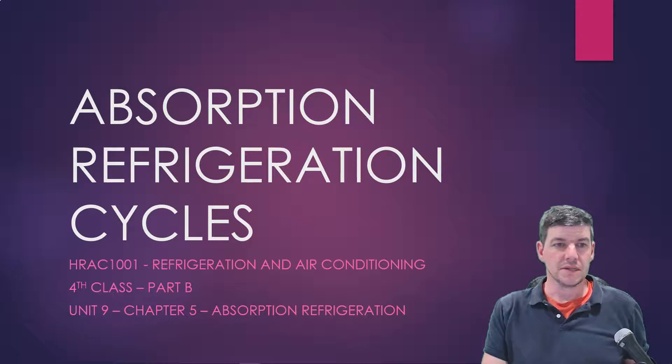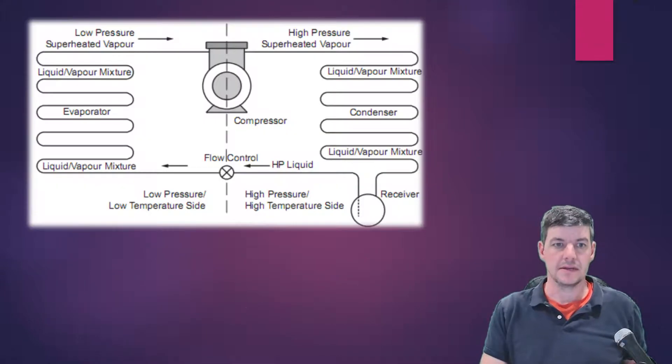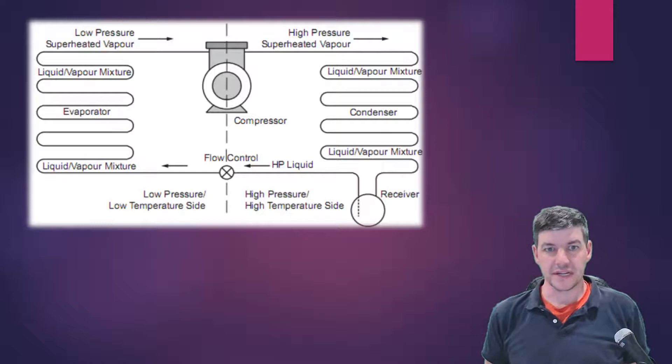So what is absorption refrigeration? Well, let's figure it out. Here's a traditional mechanical refrigeration cycle, and we have a compressor, and the compressor is going to send refrigerant to a condenser, where it's going to turn to liquid. It's going to go through a metering device over to our evaporator, where we're cooling our refrigerated space, and then it returns back to the compressor.